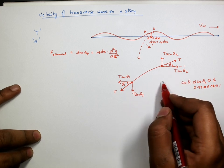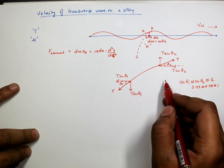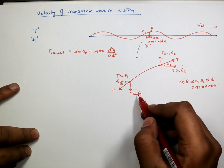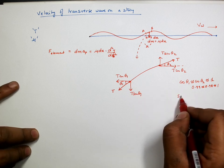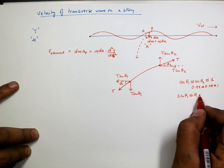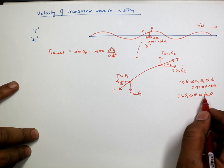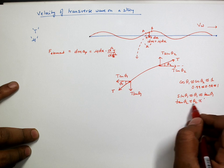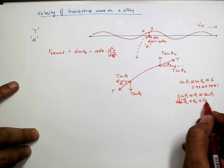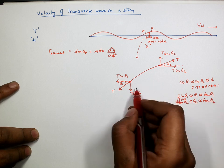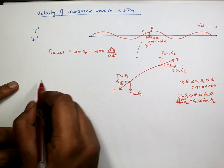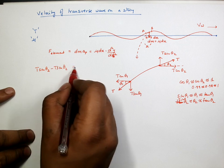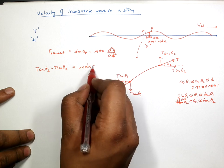However, sinθ₁ and sinθ₂ cannot be taken as zero even for small angles. They can only be approximated as their angle values or tangent values: sinθ₁ ≈ θ₁ ≈ tanθ₁, and sinθ₂ ≈ θ₂ ≈ tanθ₂. Therefore, the net force on this element is T sinθ₂ − T sinθ₁, which must equal mass times acceleration: μ dx · d²y/dt².